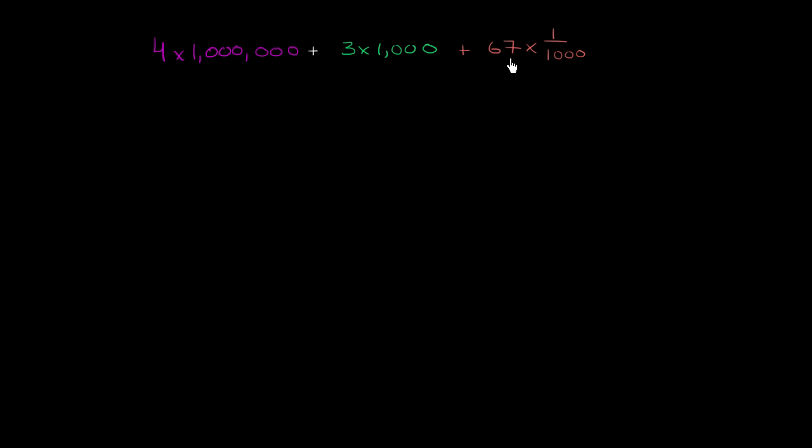I want to write this expression here as a decimal. And the first question that might pop in your head is, do I multiply 4 times 1,000,000, then add 3, then multiply by 1,000, then add 67, then multiply by 1 over 1,000? Or do I do the multiplication first?